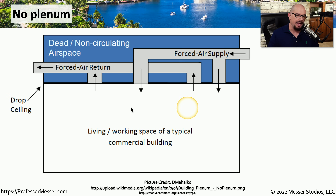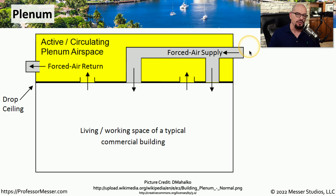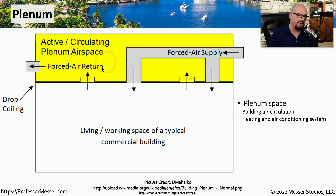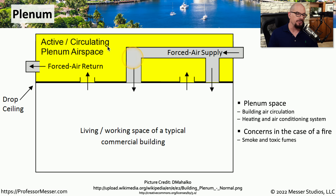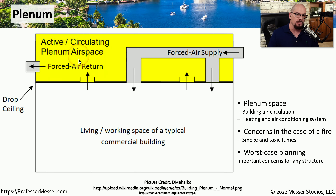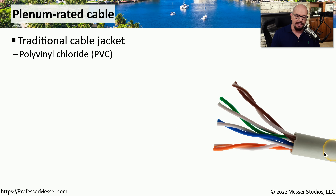In a work environment with a drop ceiling, above that ceiling may be ducts supplying cold air and removing warm air back to the air conditioning system. In some environments, the air return goes into a shared airspace called the plenum. The plenum is a shared area — it's an air return, but all network cables are usually in this airspace as well. If there's a fire, we want to ensure our network cables don't create smoke or toxic fumes that would be grabbed by the air return and forced into every other part of the building.